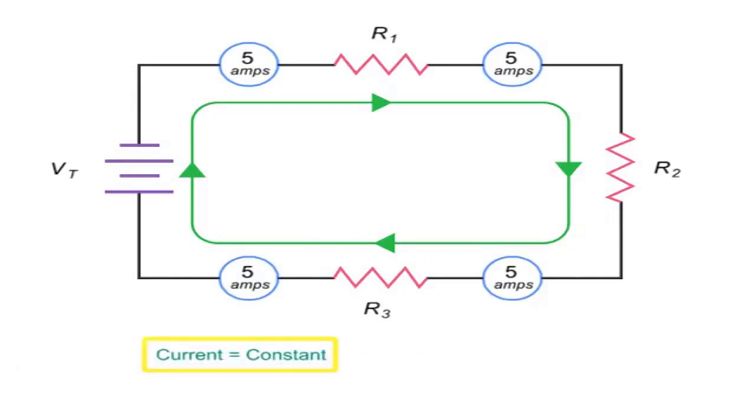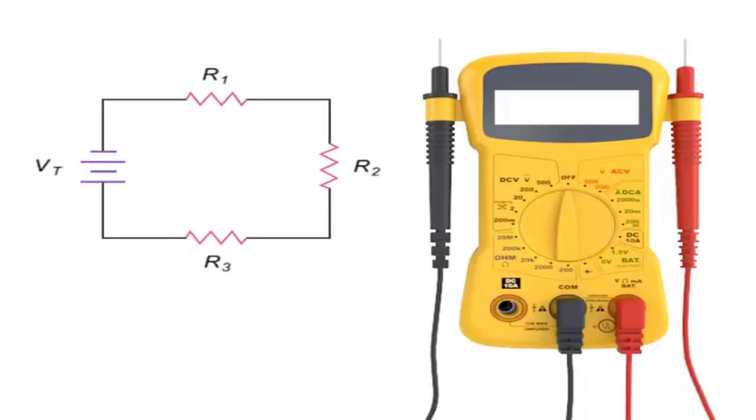Although current is constant throughout a series circuit, voltage is not. Voltage in a series circuit is divided across the load resistors so that the sum of the individual voltages equals the total voltage applied. This relationship is known as Kirchhoff's law.